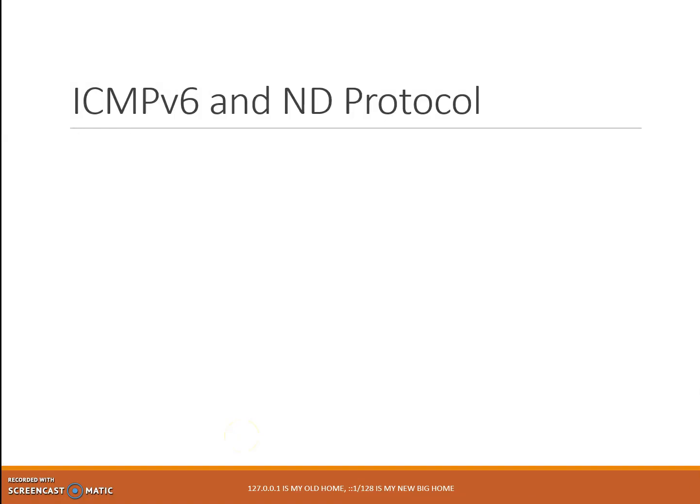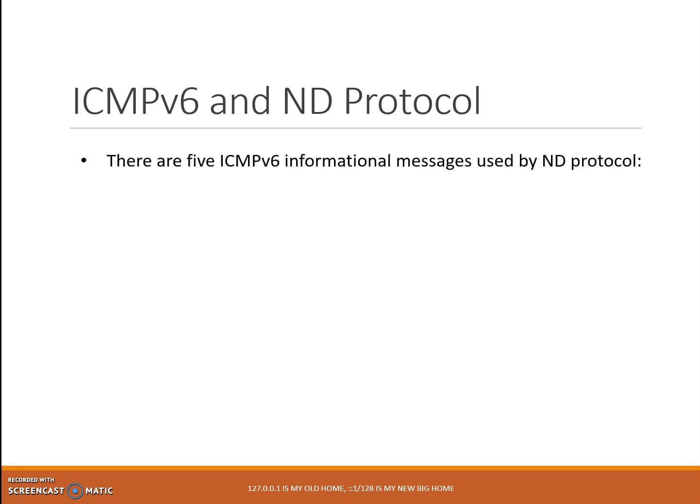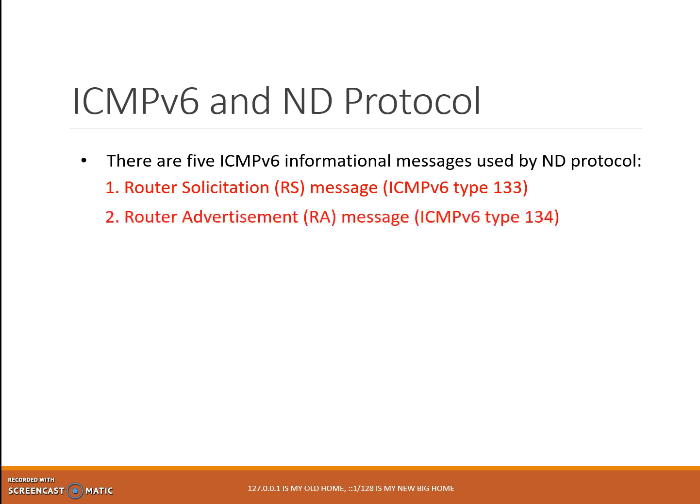In addition to ping utility and MLD, the Neighbor Discovery (ND) protocol uses some ICMPv6 informational messages. There are five ICMPv6 informational messages used by the ND protocol. Number one: Router Solicitation (RS) message, ICMPv6 Type 133. Number two: Router Advertisement (RA) message, ICMPv6 Type 134.